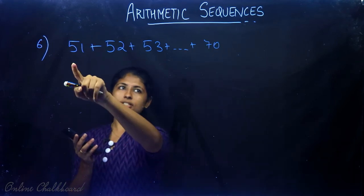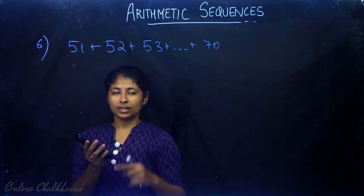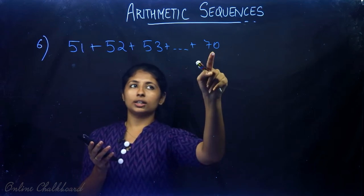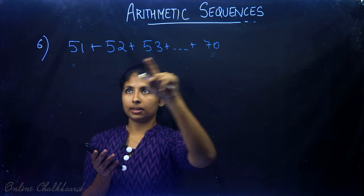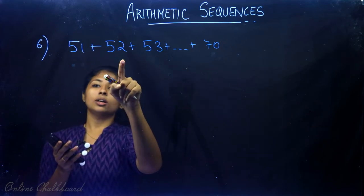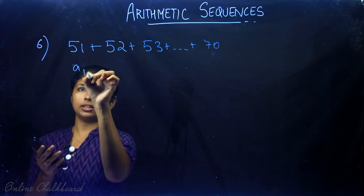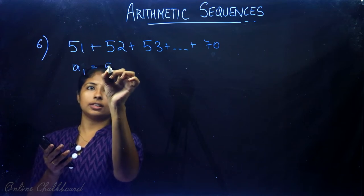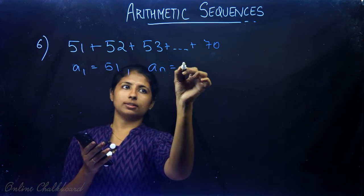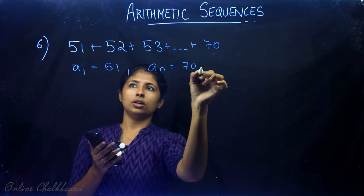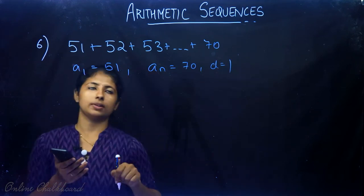I will explain. The first term is 51, the last term is 70, and the common difference is 1, since 52 minus 51 equals 1.